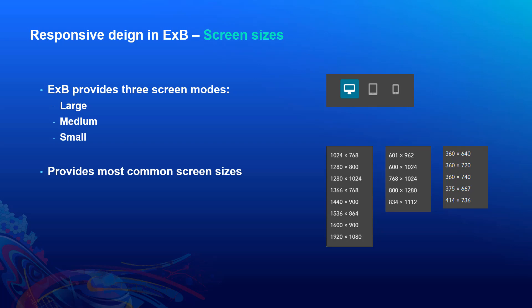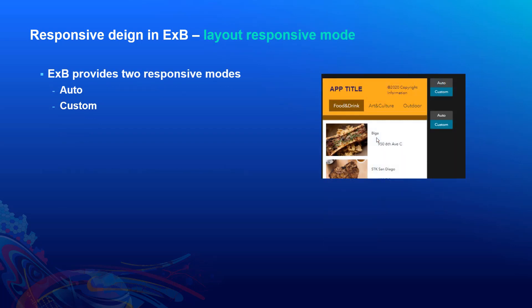When designing an app in Experience Builder, you focus on the large screen size, but you can adjust and optimize the other two screen modes as well. You can select any provided screen size to preview and edit. When you switch from large screen to medium or small screen, you will see two responsive modes: Auto or Custom.